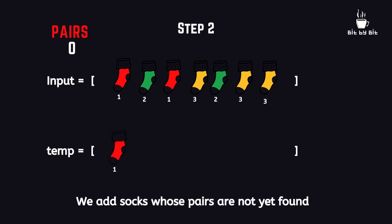Now we loop over the input array and check if the current sock is in the temporary list. If not, we add the sock inside the list. Initially the temporary list is empty, so we just add the first sock inside the list and move to the second sock.